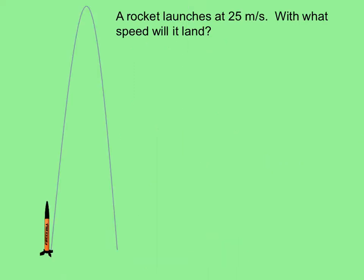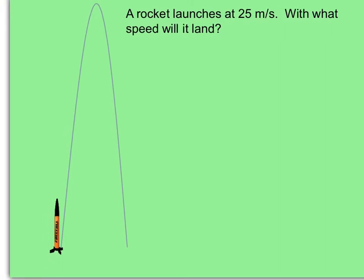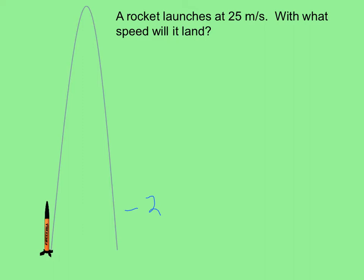Based on that, let's consider the situation. It says a rocket launches at 25 meters per second. With what speed will it land? It will land at negative 25 meters per second, the same magnitude as the initial velocity, but in the opposite direction. Let's remember that by conventional direction, everything up is positive, while everything down is negative.